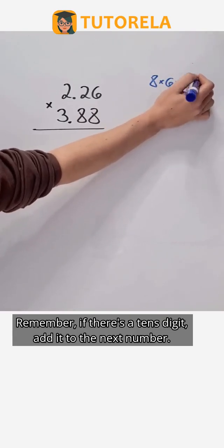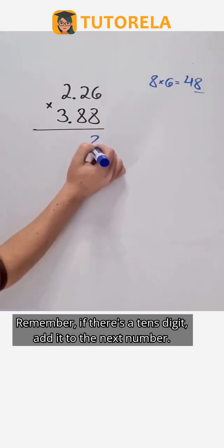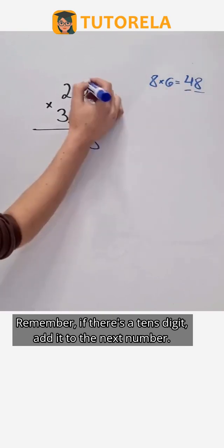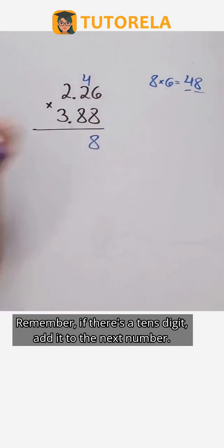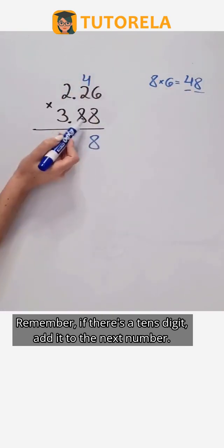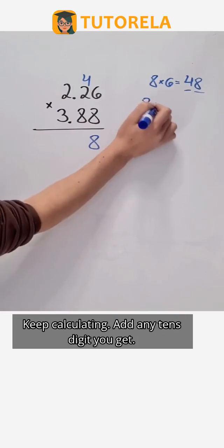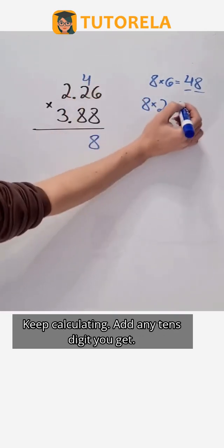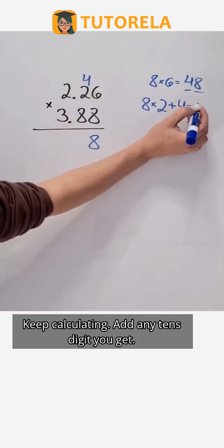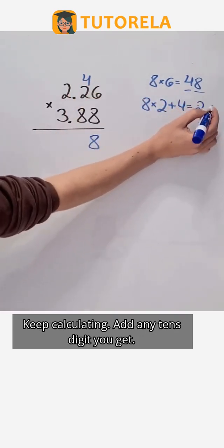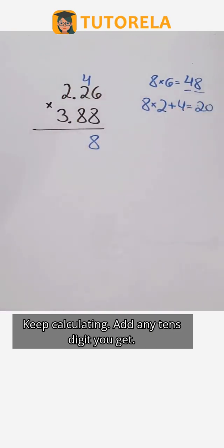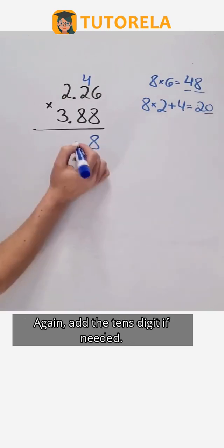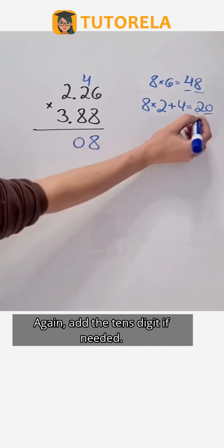Remember, if there's a tens digit, add it to the next number. Keep calculating. Add any tens digit you get. Again, add the tens digit as needed.